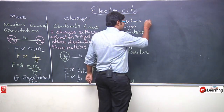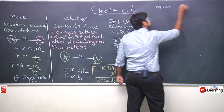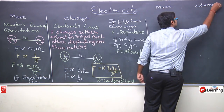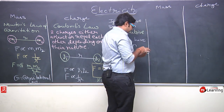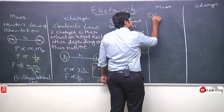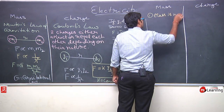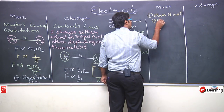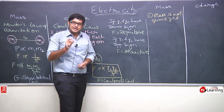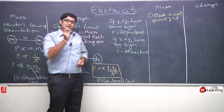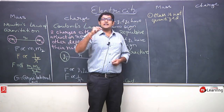This is the comparison between mass and charge so that you get a feel for what charge basically is. The next property: mass is not quantized. Quantized means the mass is an integral multiple of some particular unit.